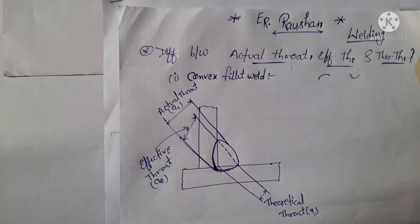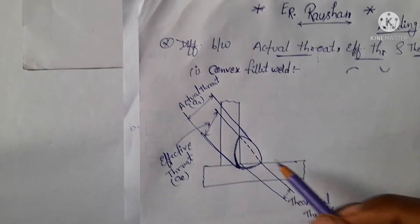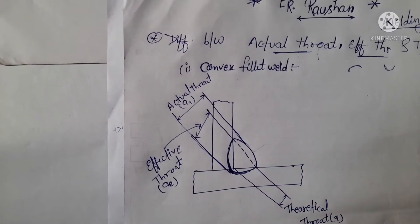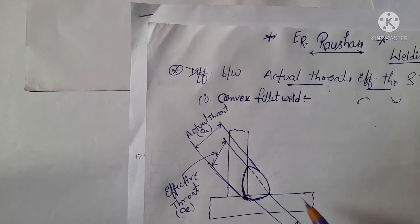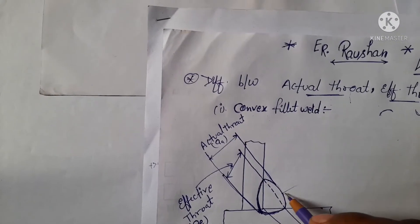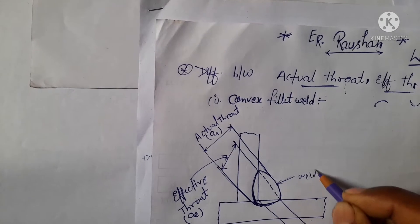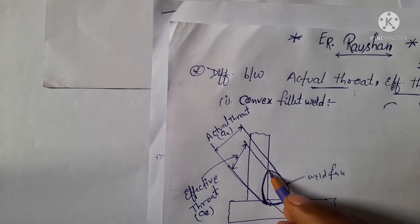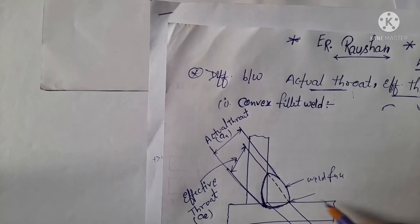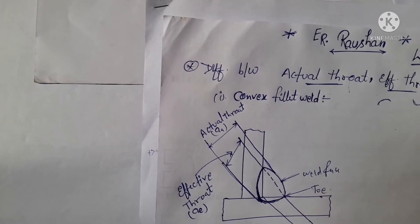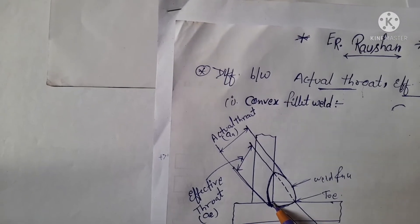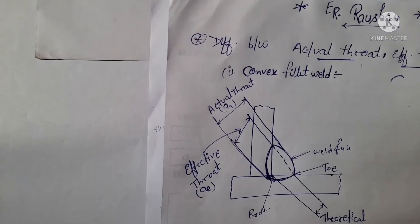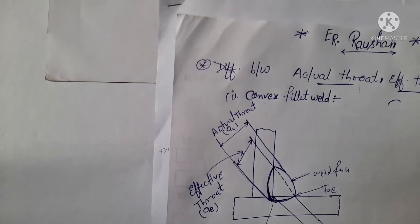First, let's look at the nomenclature of welding. This portion is known as the weld face. This portion is known as the toe. And this portion is known as the root — the welding root.